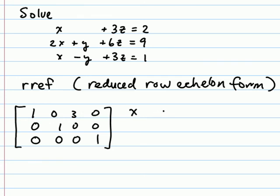It would say x plus three z equals zero, y equals zero. No problem yet. The very last row, though, tells me zero equals one. That's a problem. Zero is not equal to one.